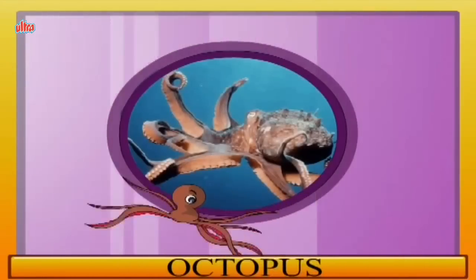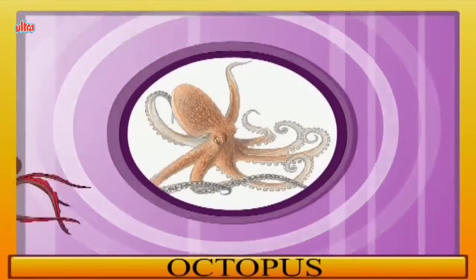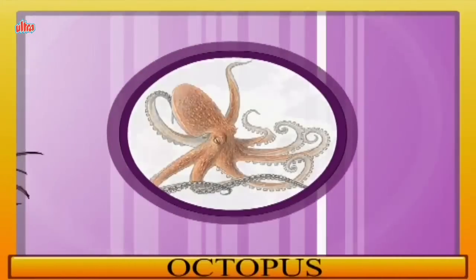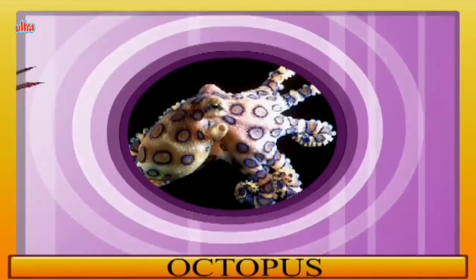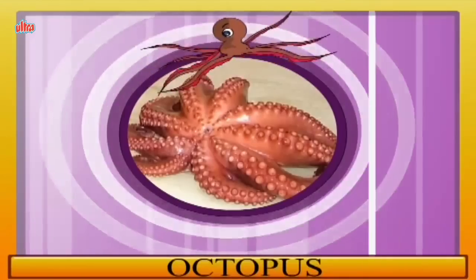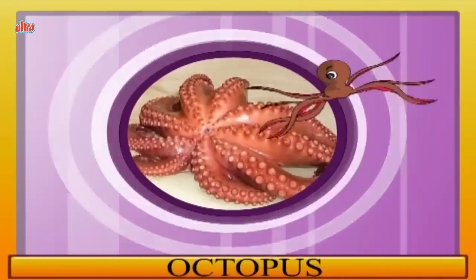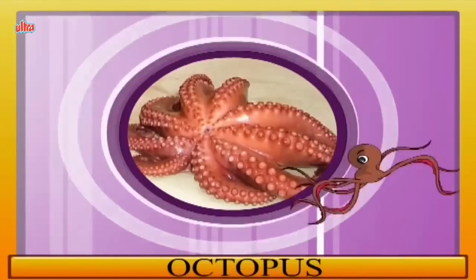O for octopus. Octopuses have two eyes and four pairs of arms. Most octopuses have no internal or external skeleton, allowing them to squeeze through tight places.